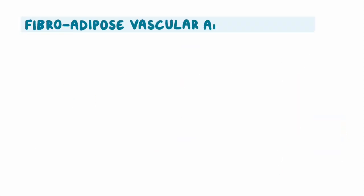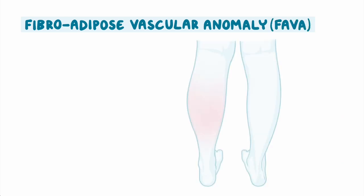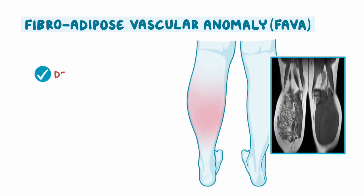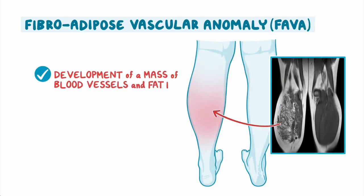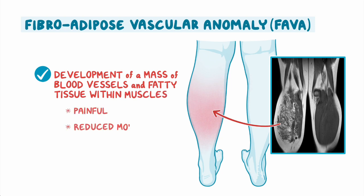Fibroadipose vascular anomaly, or FAVA, is characterized by the development of a mass of blood vessels and fatty tissue within muscles, which can be painful and reduce mobility.